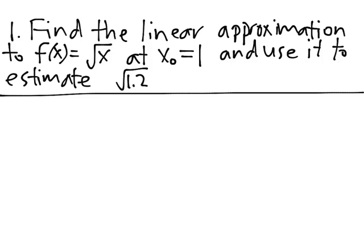Here are some examples of problems about linear approximations and Newton's method. Problem 1: Find the linear approximation to f(x) = √x at x₀ = 1, and use it to estimate the square root of 1.2.